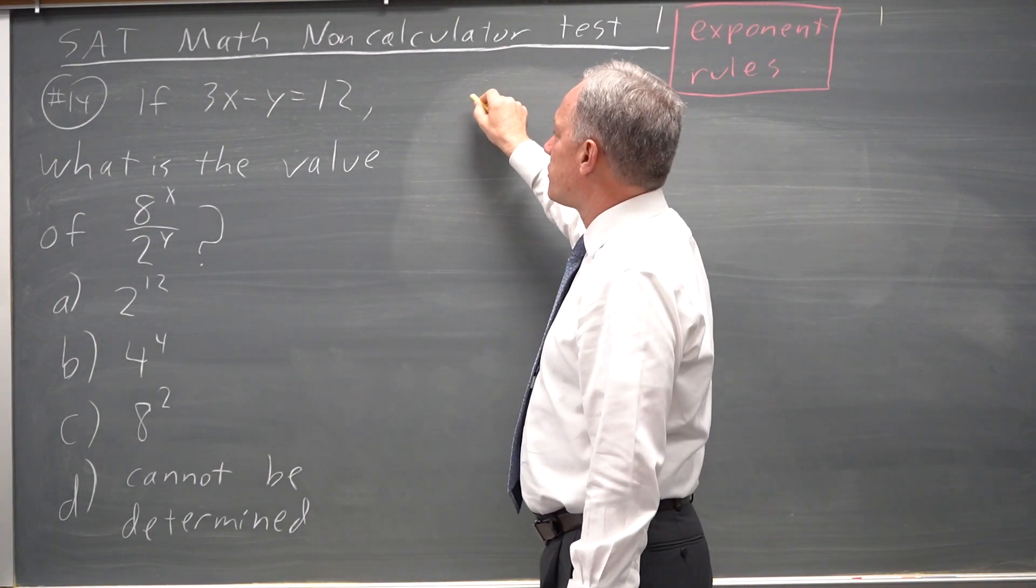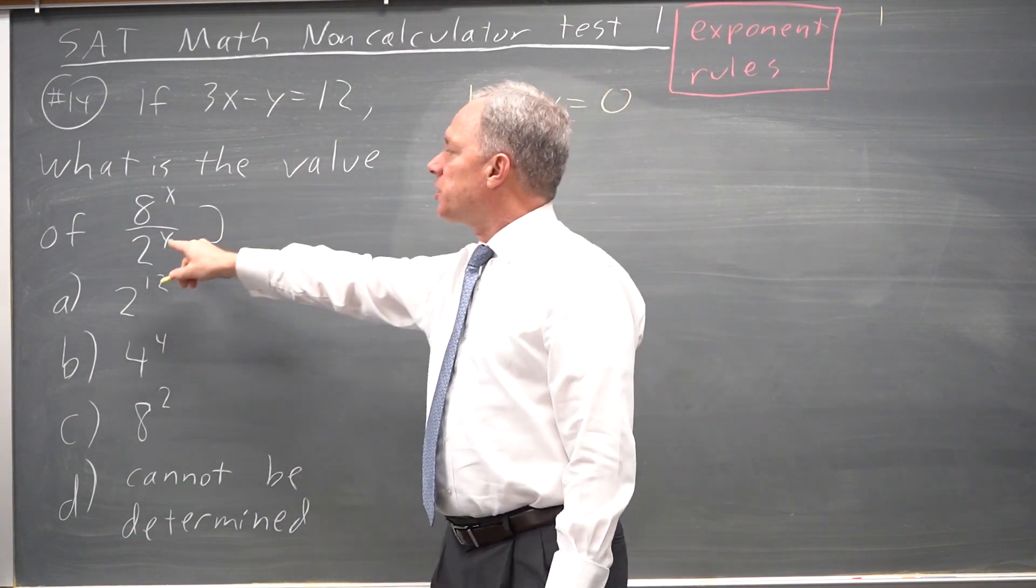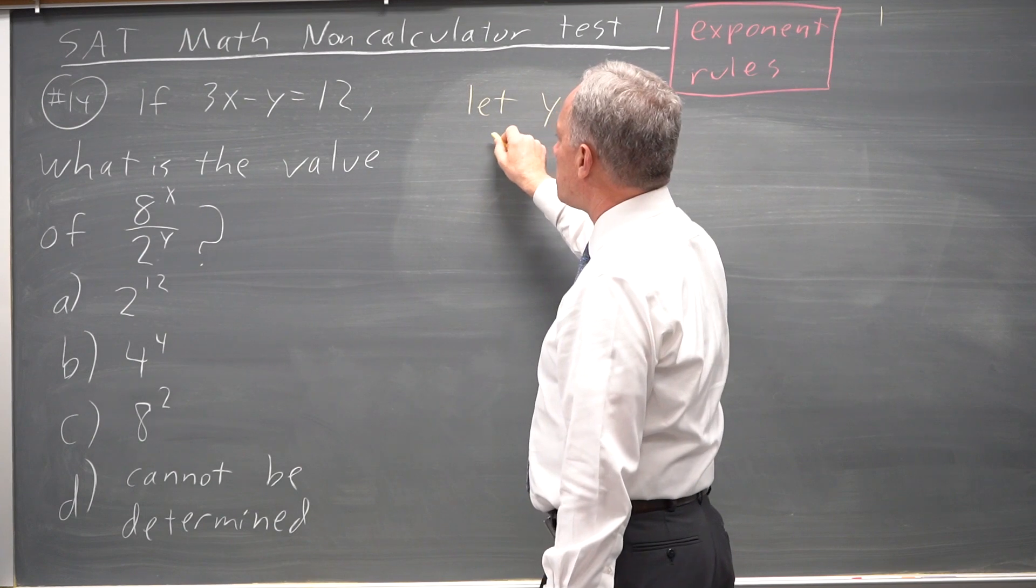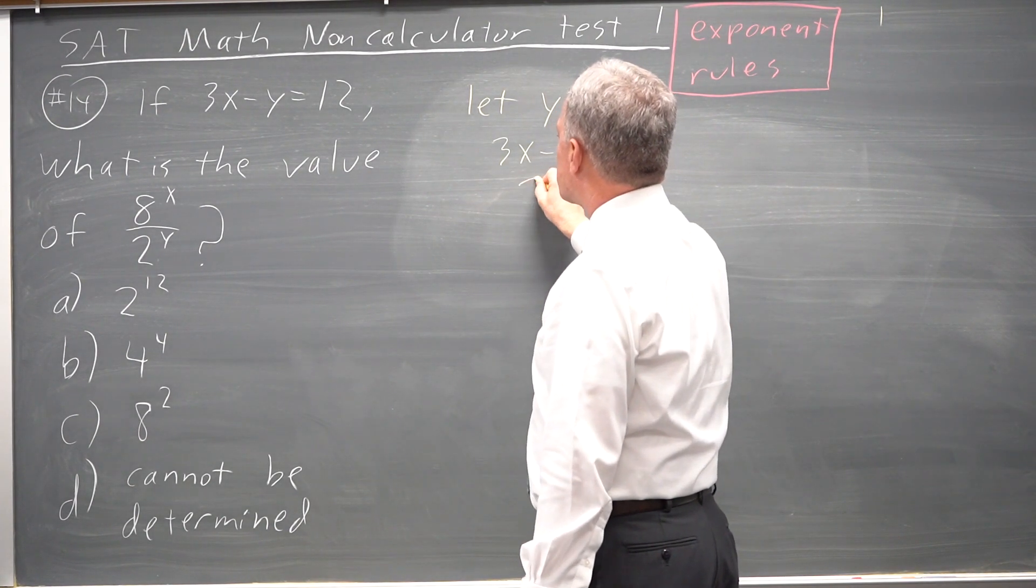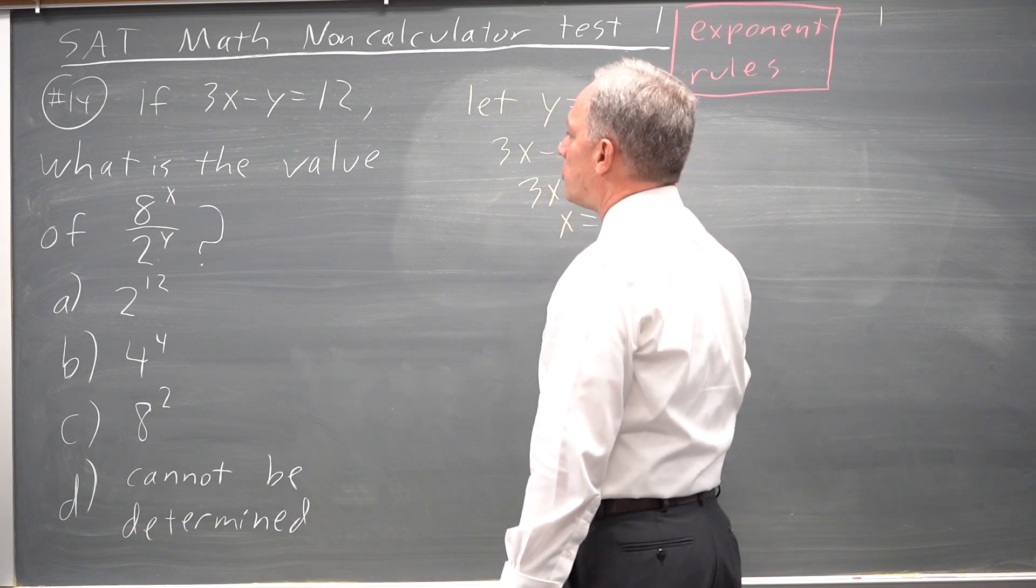As I often do, I'm going to choose a value. I'm going to choose y equals 0 because anything to the 0 is 1, so my denominator will be 1. If y is 0, then 3x minus y, which is 12, is 3x minus 0 equals 12, or x equals 4.